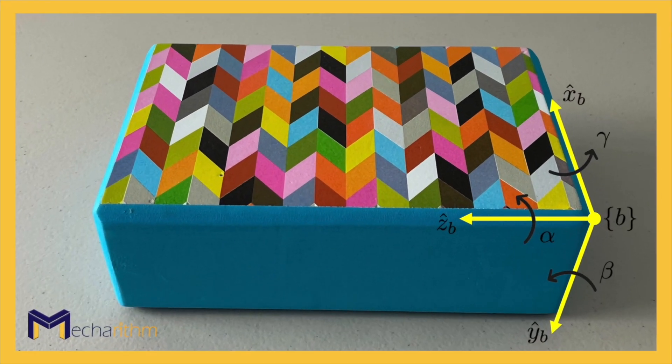Consider the body frame B is instantaneously attached to a rigid body and was initially aligned with the space frame S. The ZYX Euler angles — alpha, beta, gamma — are specified by a rotation of the body by alpha about the body's Z axis, then by beta about the body's Y axis, and finally by gamma about the body's X axis.